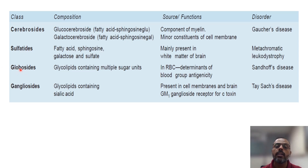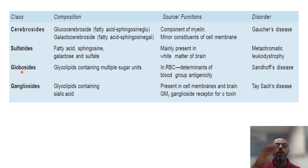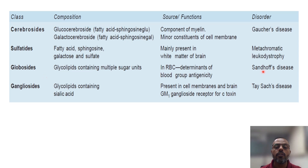The third glycolipid is the globosides. Globosides contain multiple sugar units and are present on the outer surface of the RBC membrane, where they help in the determination of blood group antigenicity.